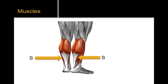Located deep to that muscle is the soleus muscle. It has more mass — it's larger compared to the gastrocnemius — and gives the calf muscle group the overall mass that it has, since the gastrocnemius is smaller and thinner overall.